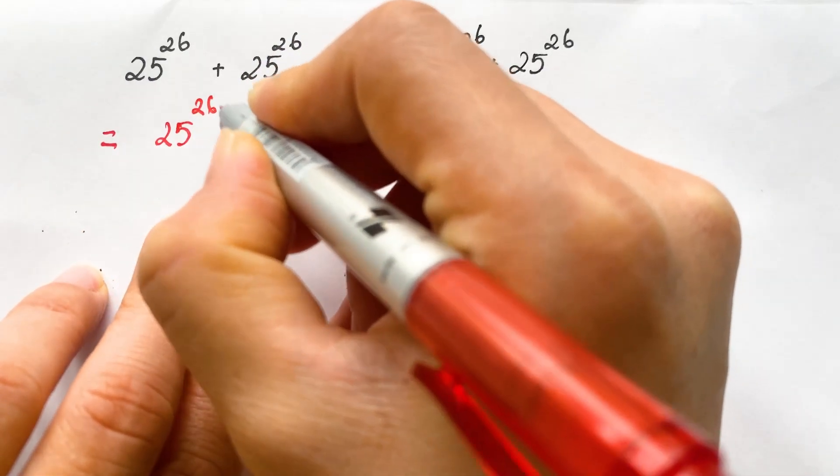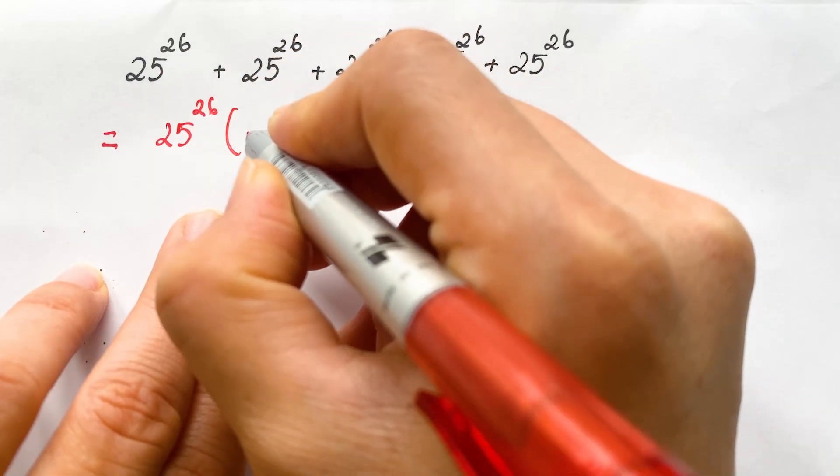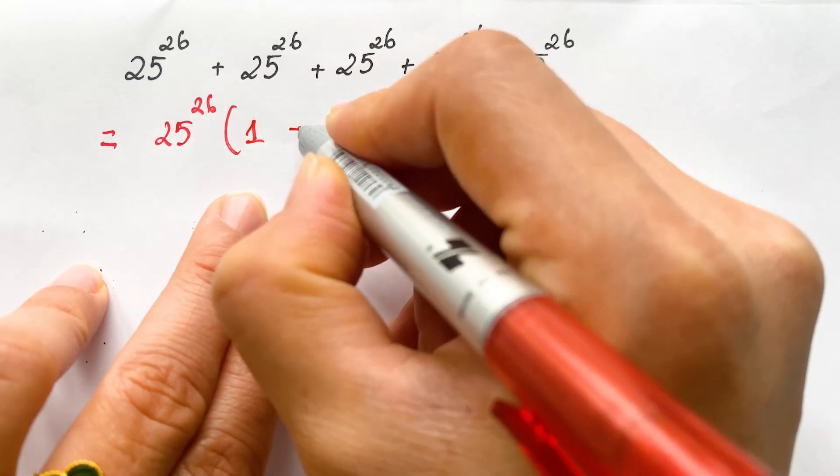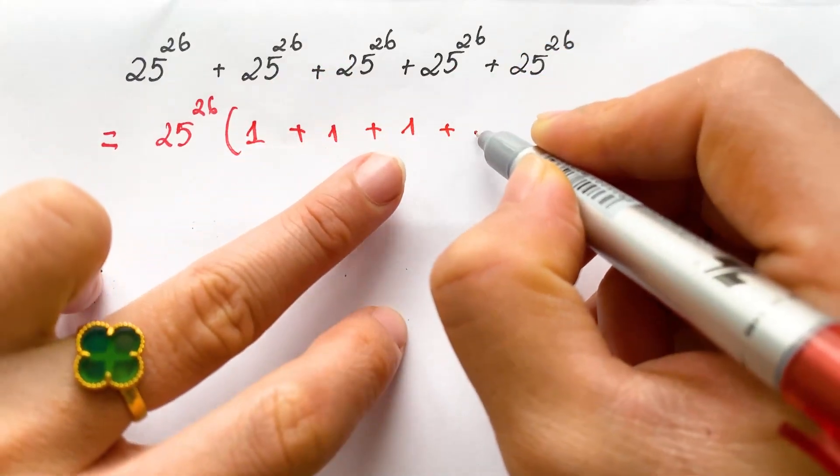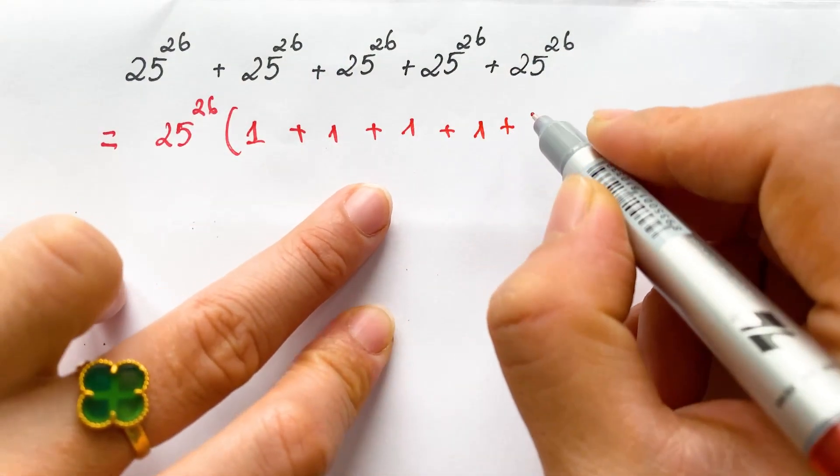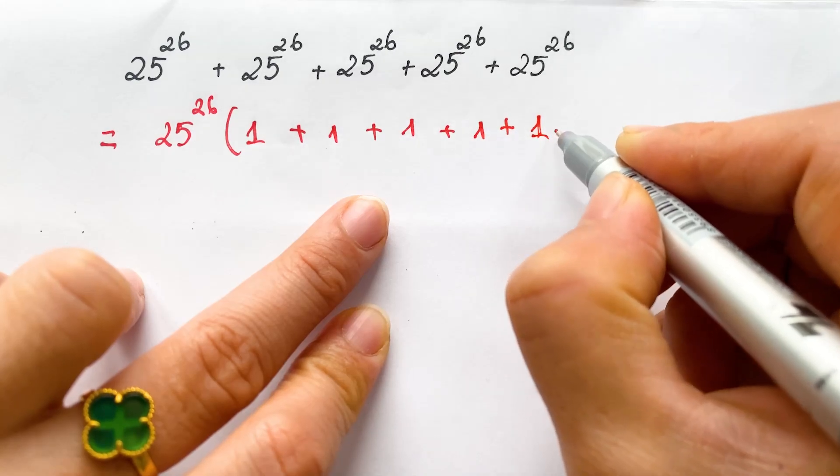And then in bracket, we have the remainder 1 and next 1 plus 1 and next 1 plus 1 and next 1 plus 1, right?